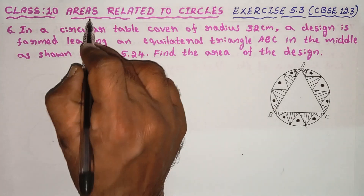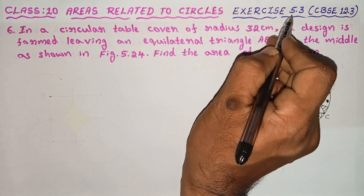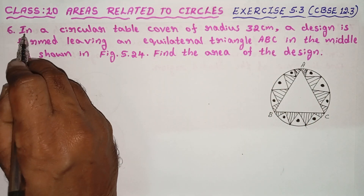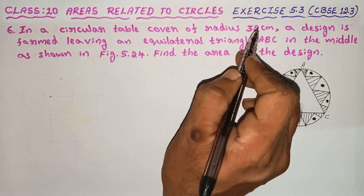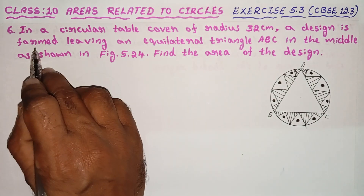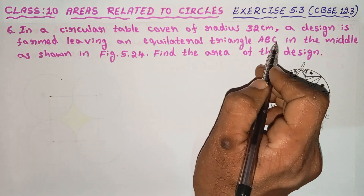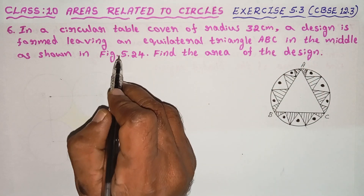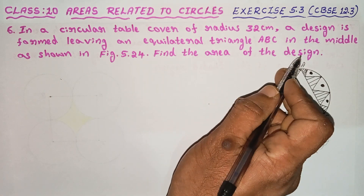Class 10. Areas related to circles. Exercise 5.3, sixth problem solve. In a circular table cover of radius 32 cm, a design is formed leaving an equilateral triangle ABC in the middle, as shown in figure 5.24. Find the area of the design.